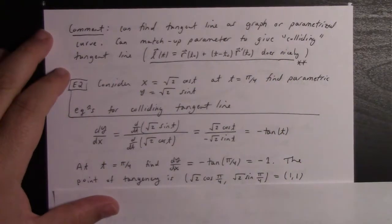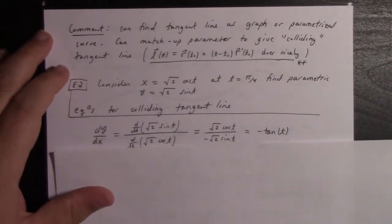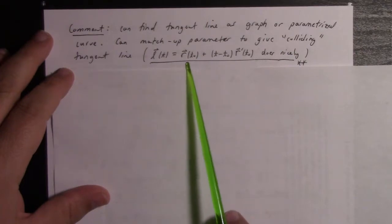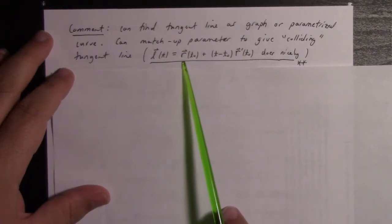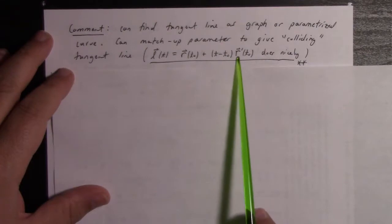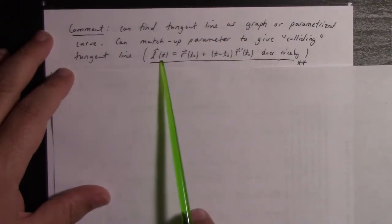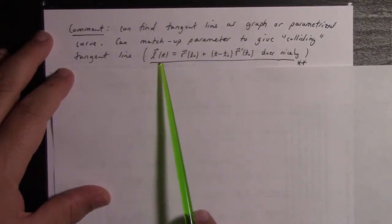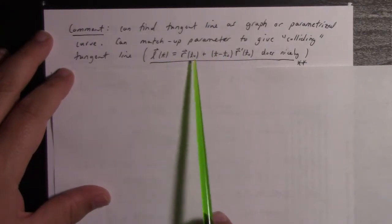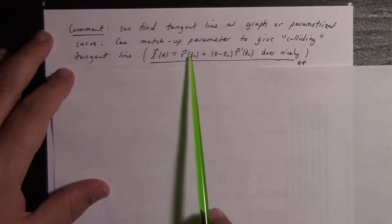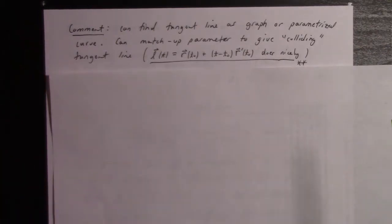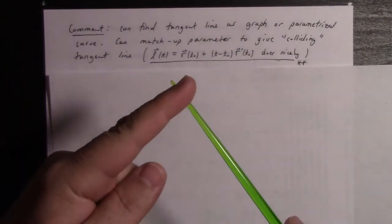We can also find the tangent line as a graph or as a parametrized curve. We can even match up the parameter and give the so-called colliding tangent line: L(t) = r(t₀) + (t - t₀)r'(t₀). Notice that when we plug in time t₀, we get L(t₀) = r(t₀). When two paths intersect at the same time, we say that they collide.